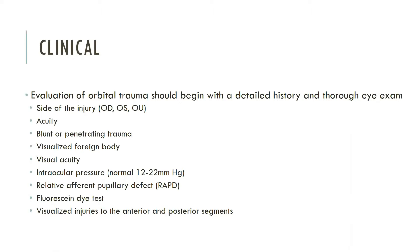Pertinent details from the history include the sign of injury, the acuity, and whether it was blunt or penetrating injury. The important things to look for in the documented eye exam include any visualized foreign bodies, visual acuity, intraocular pressure, presence of a relative afferent pupillary defect, fluorescein dye test results, and any visualized injuries to the anterior or posterior segments.